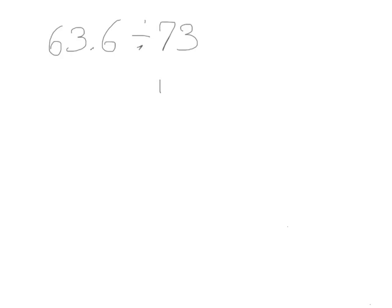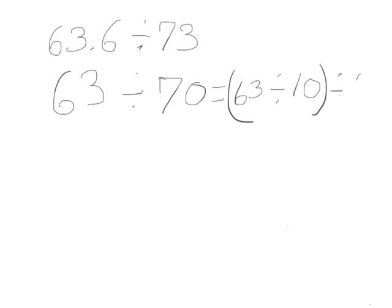The question wanted to know about how many pounds of rice were in each bag, so we will estimate. First, we round our divisor. 73 would round to 70. I know that 7 times 9 is 63, so I'm going to round my whole to 63. That way I can use a basic fact to answer this. 63 divided by 70 is the same as 63 divided by 10 divided by 7.